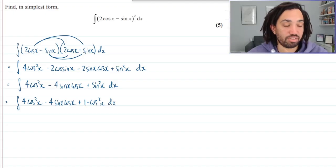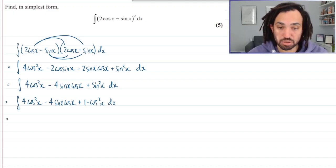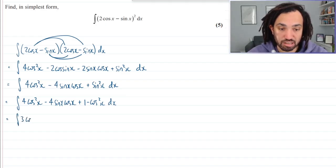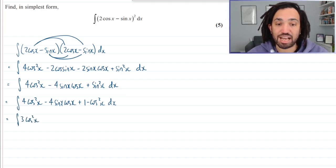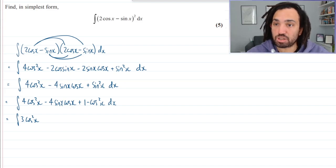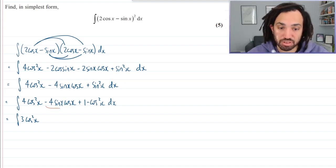Okay, lovely. So how many cos squared x's have I got? I've got 3 cos squared x's. And what about this thing in the middle? I've kind of ignored that. This is a double angle.